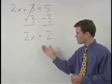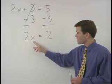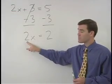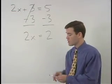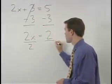And we're left with a situation that is just like the problems in the previous section. To get x by itself, since it's being multiplied by 2, we just divide both sides of the equation by 2.